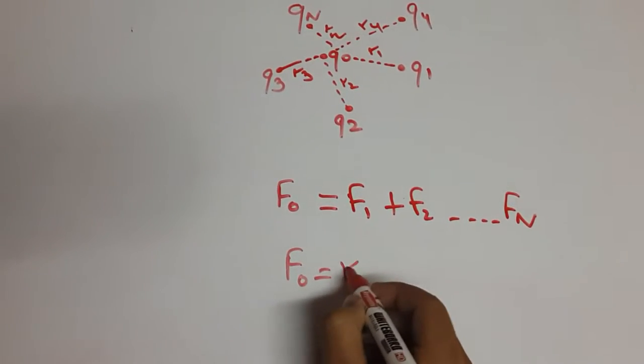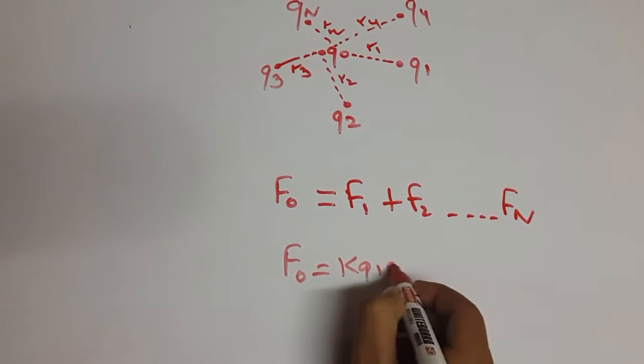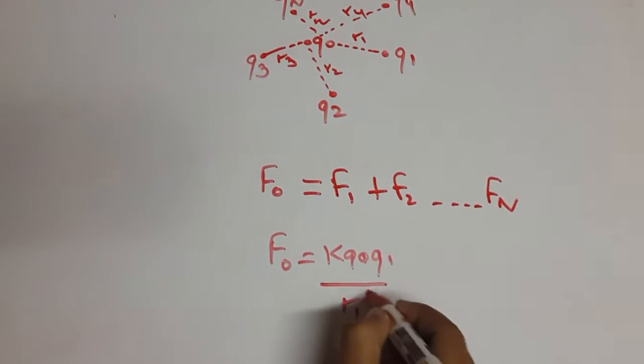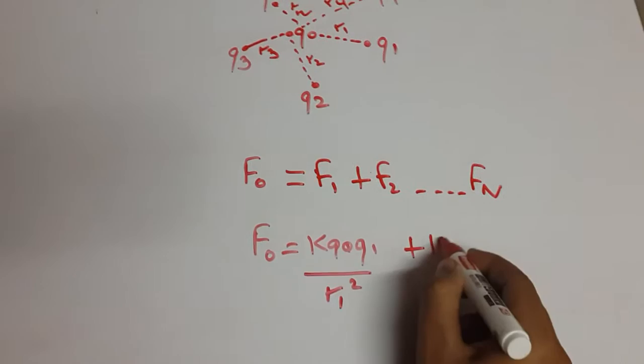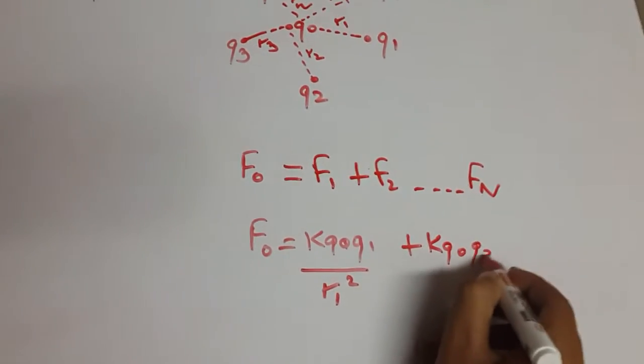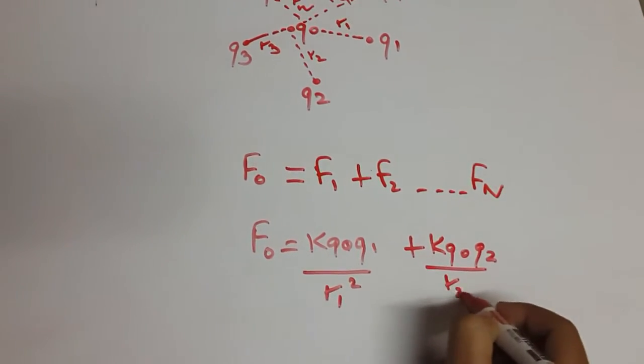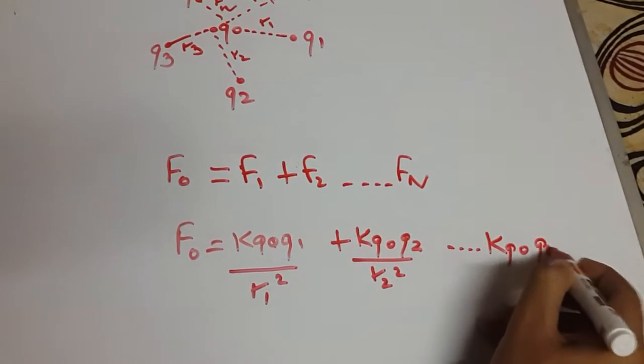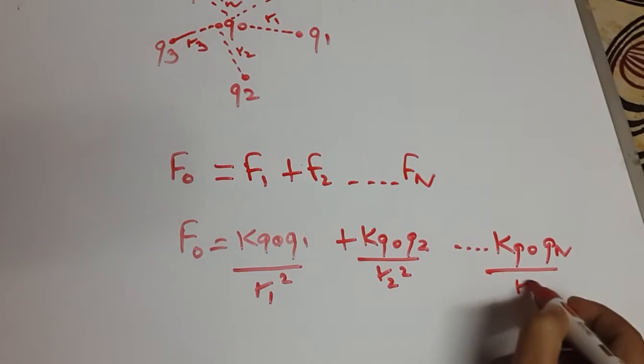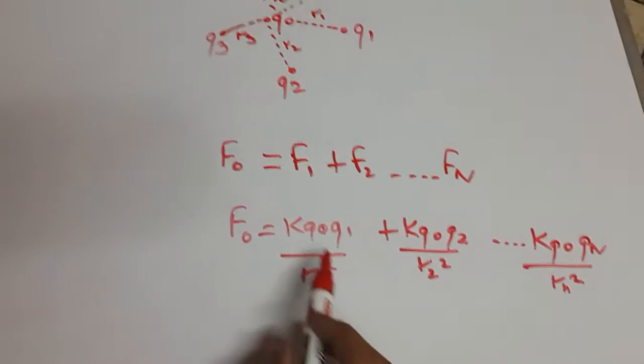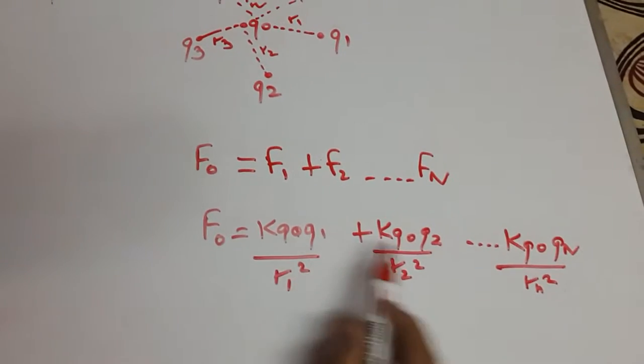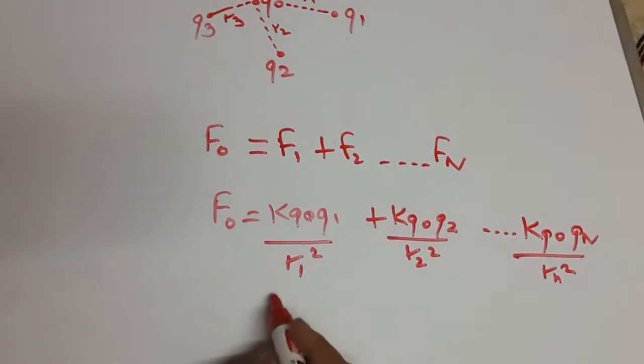k q0 q1 upon r1 square plus k q0 q2 upon r2 square till k q0 qn. We can see that electrostatic force constant and q0 is common in all the equations so we can take it common